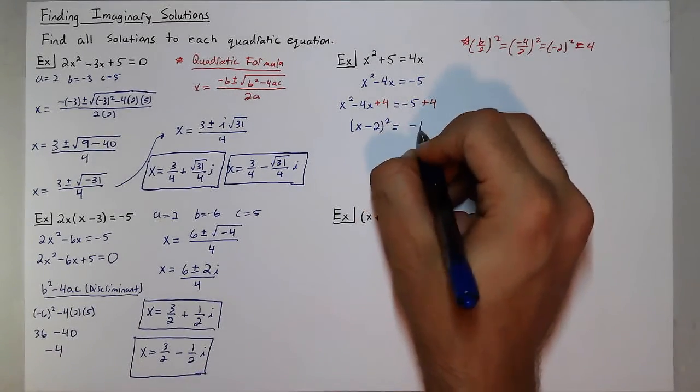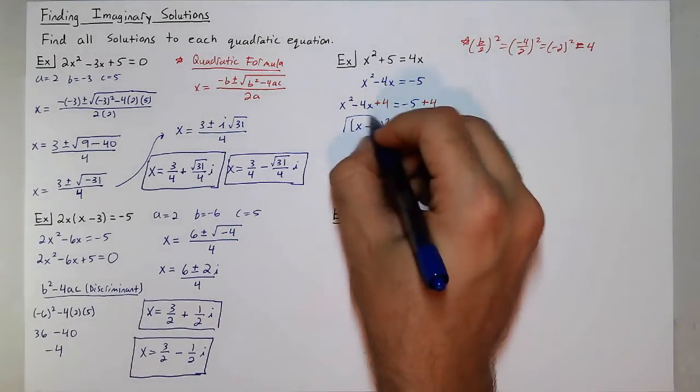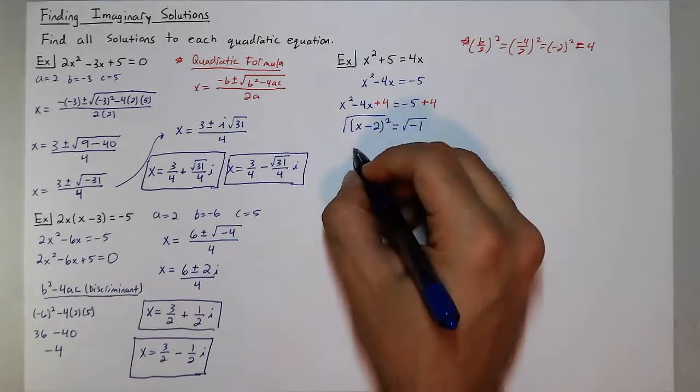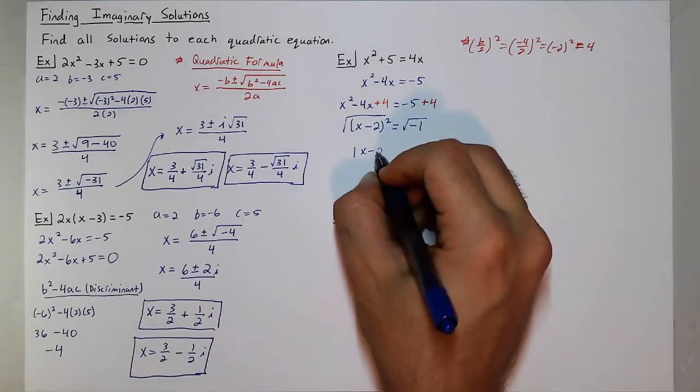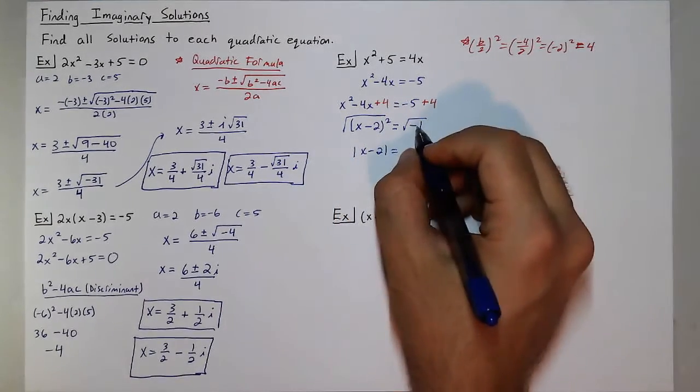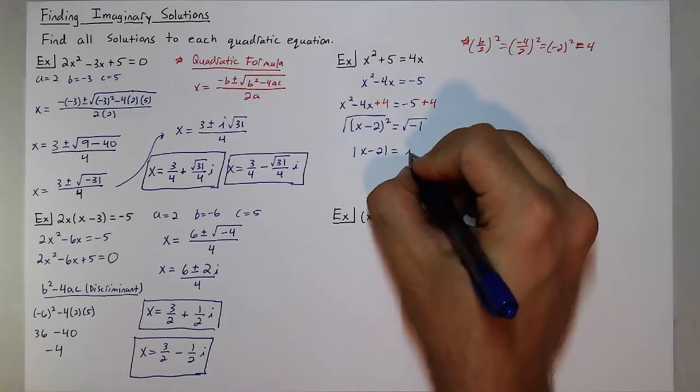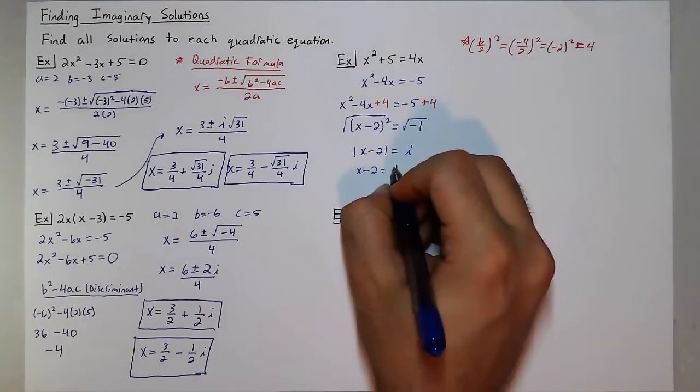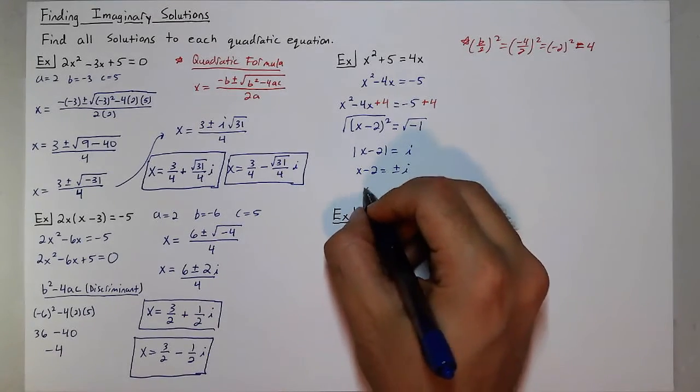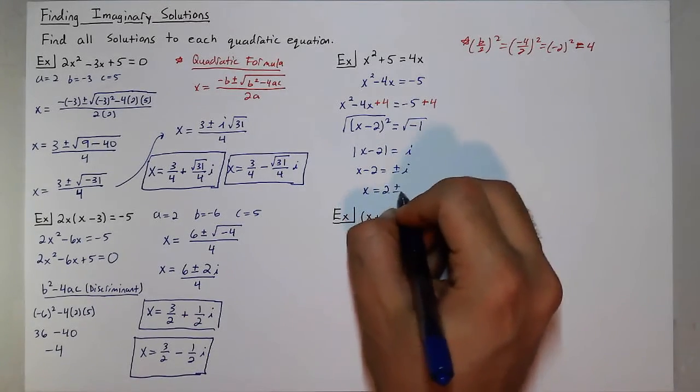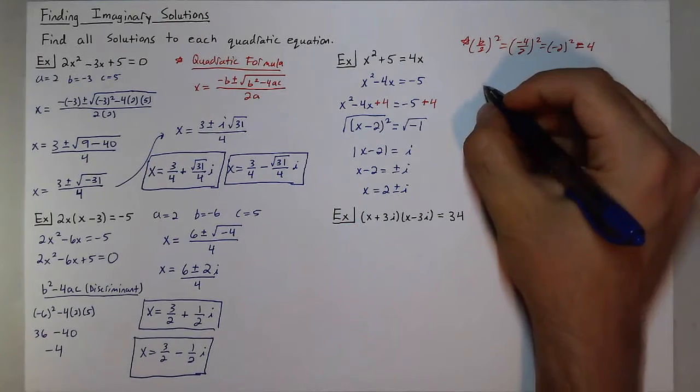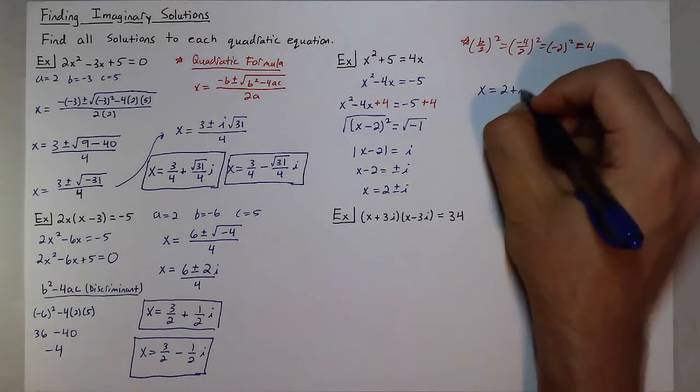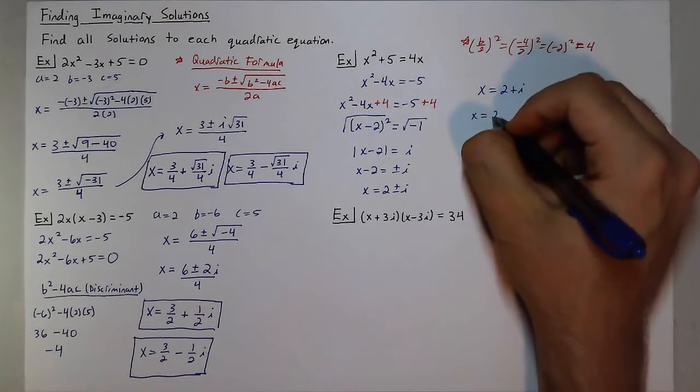And then we can take the square root of both sides. Gives me the absolute value of x - 2 equals the square root of negative 1, which is i. Now get rid of the absolute value, we can get plus or minus i. Add 2, x equals 2 plus or minus i. So my two solutions are 2 + i and x equals 2 - i.